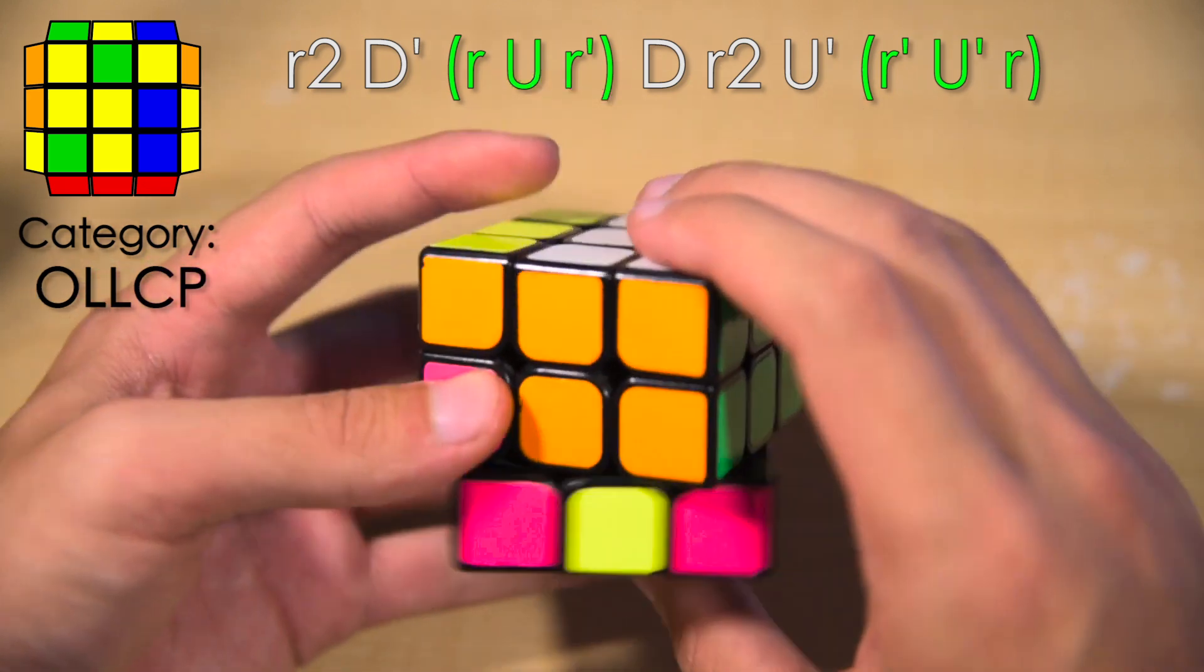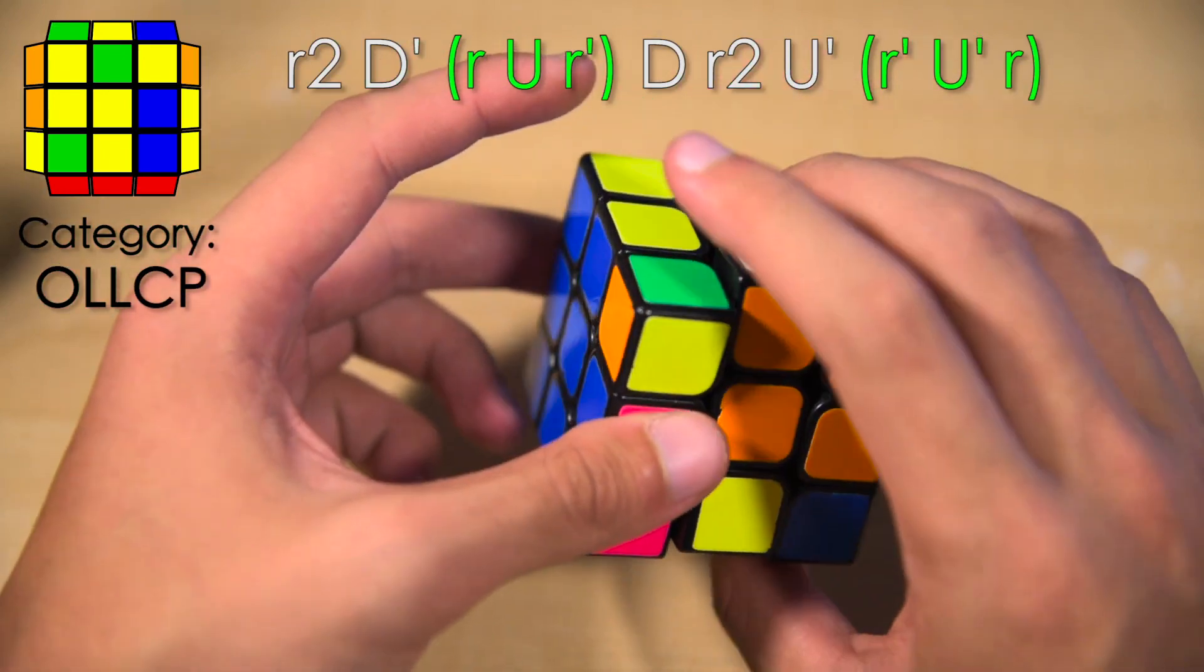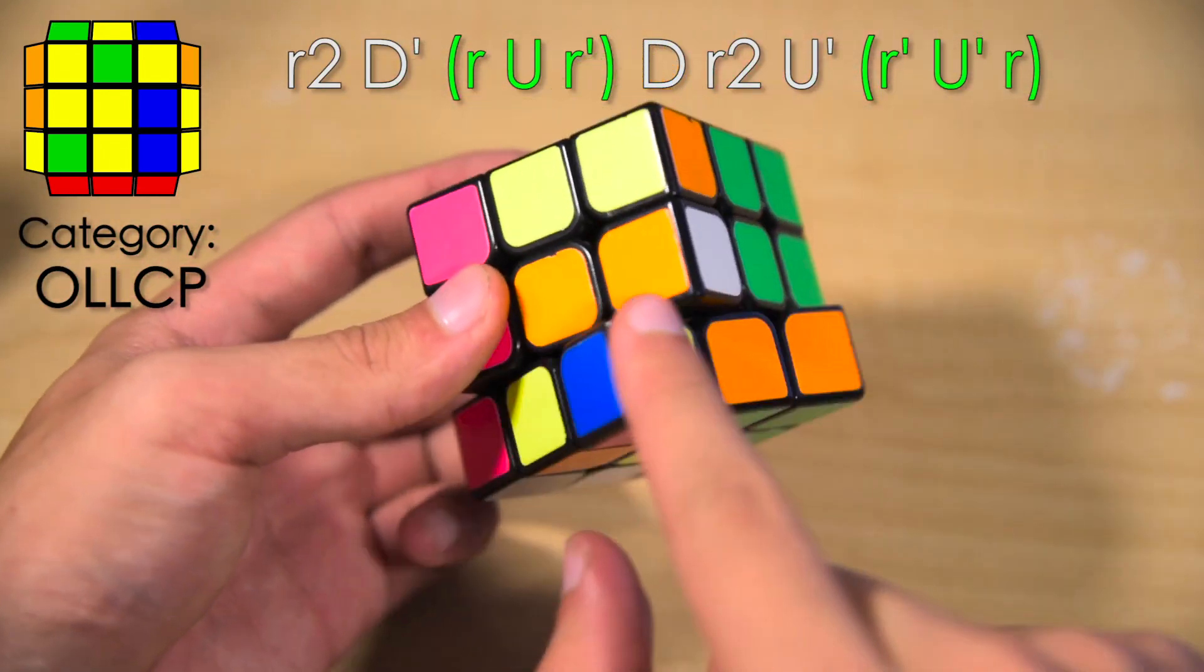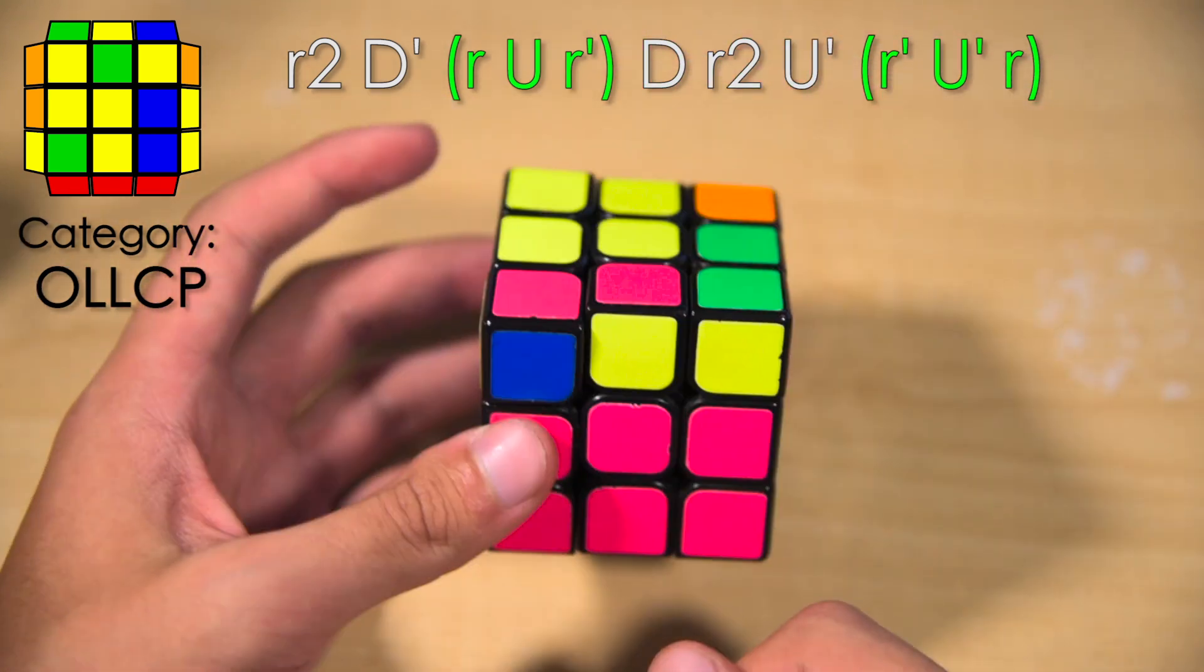So, again, it's so fast. Little r2, d prime, little r u, little r prime, d break up the pair, little r2, and then solve the back pair. Like that.